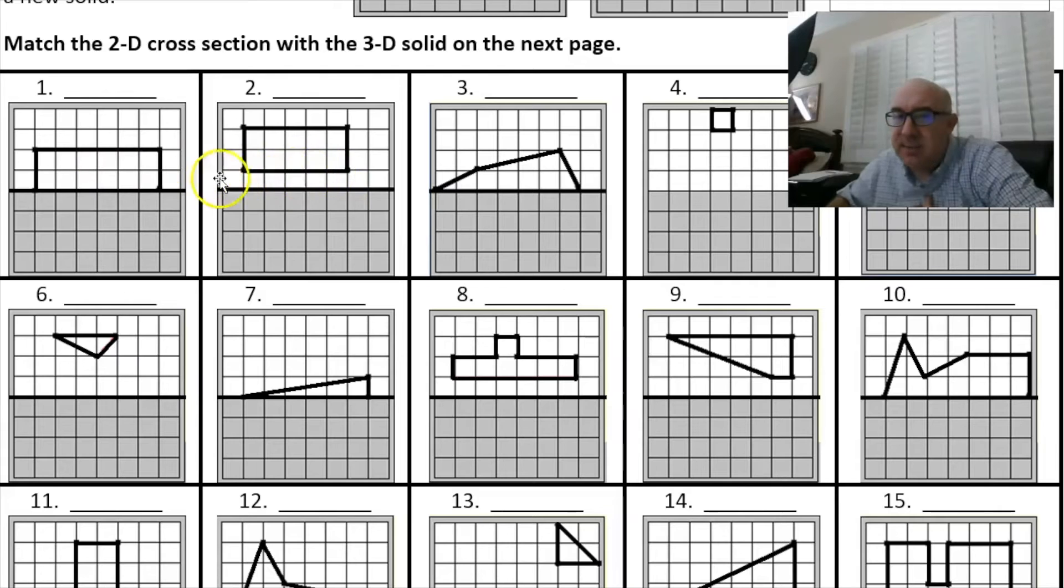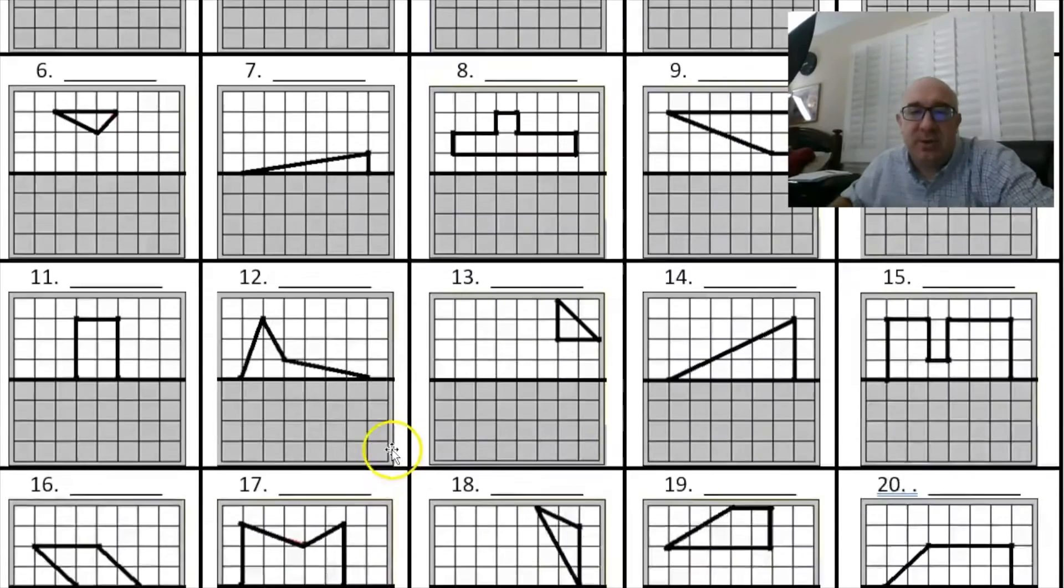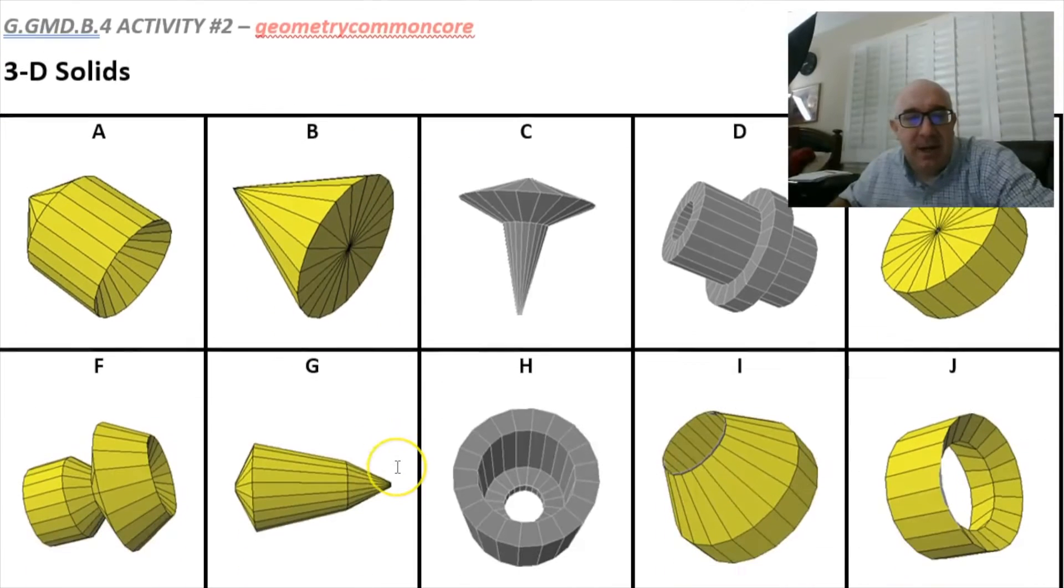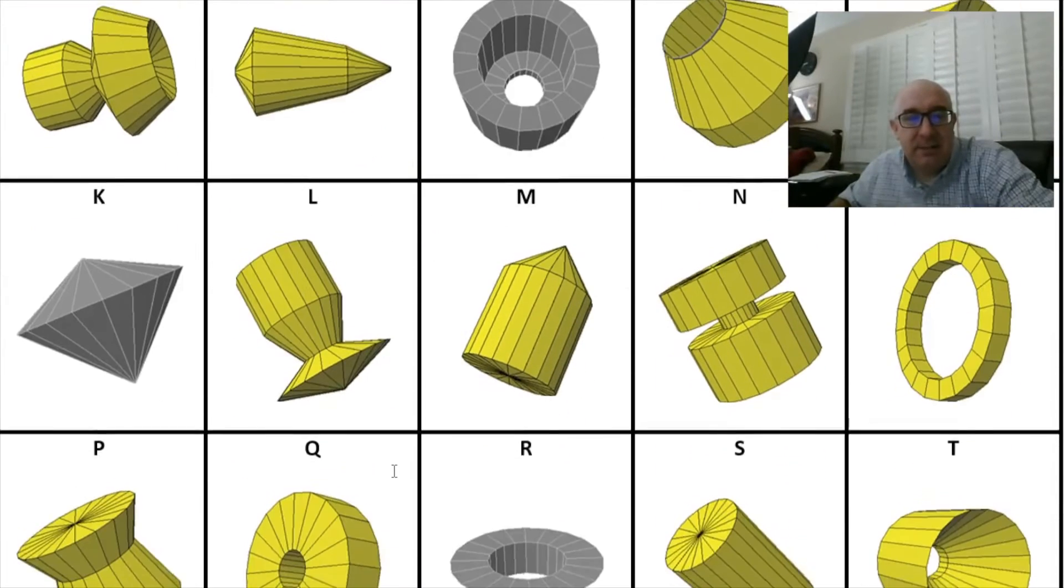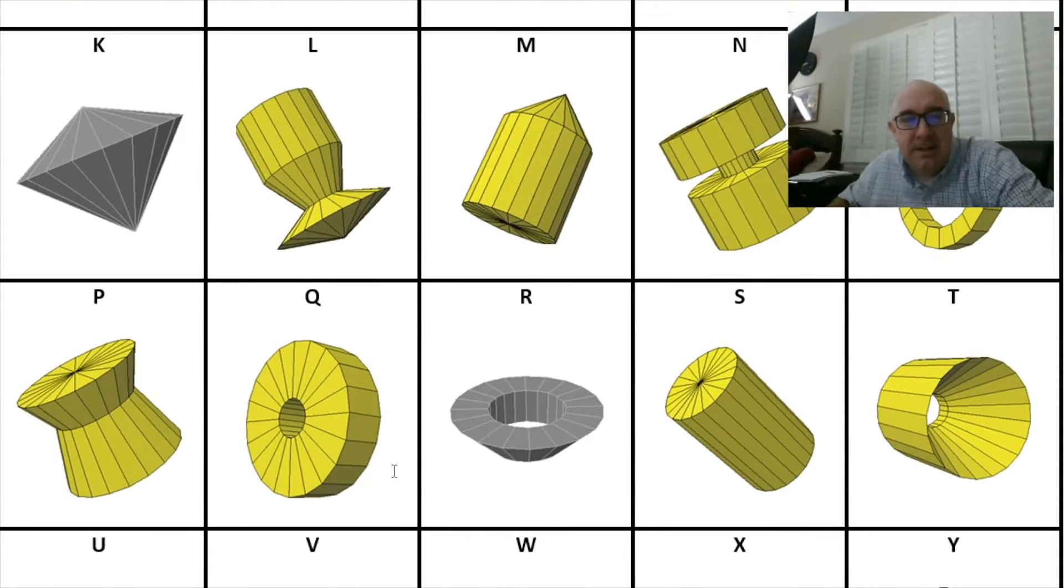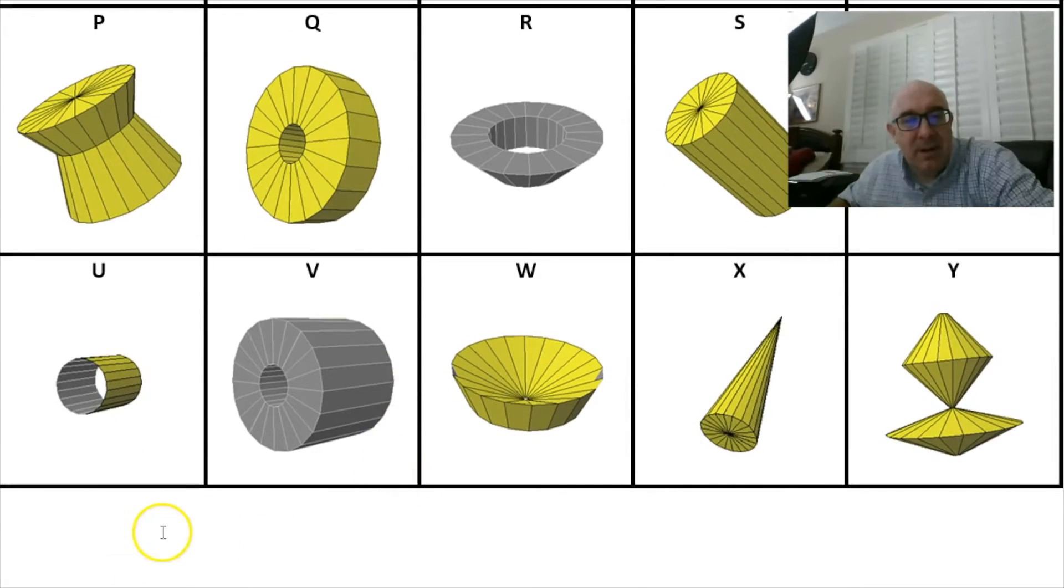Now this one, see how it's got a space there? Well that means that again you're going to get a cylinder but in that one little area you're going to get a hole that is also a cylinder. So it might look like, let's see, probably this guy right here, right?